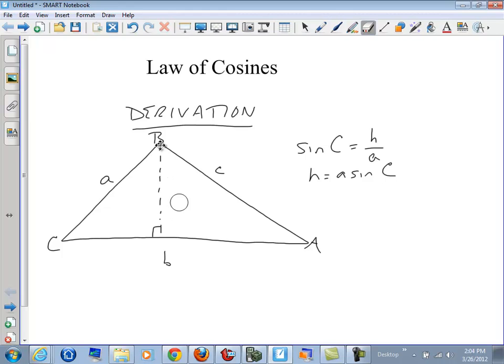So I can now change that from h to a times the sine of angle C. If I do the same thing for this red segment of side b, again that's in the right triangle, therefore I can now say that the cosine of C is equal to the red divided by side a. So that means that the red is a times the cosine of angle C.